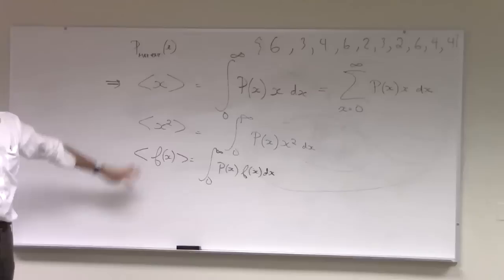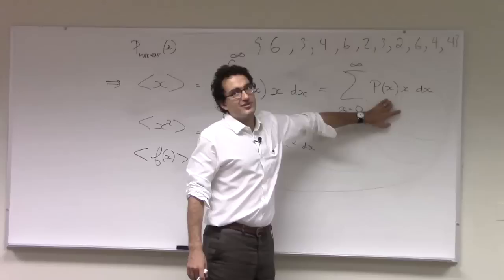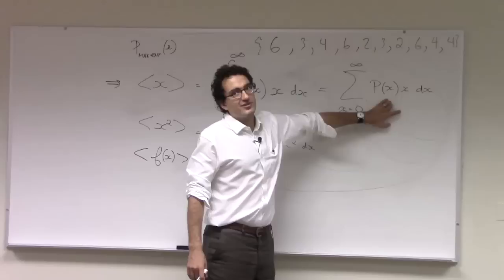And in general, the expectation value of a function F of X is weighting F of X by the probability of each X. So this notation here should be something that, if you're not familiar with it or you're not comfortable with it, you should take some time and just figure out why this is the correct way to talk about the average value of X. And if you like, this one here might be more familiar to you if integrals are still a little scary, which they shouldn't be.